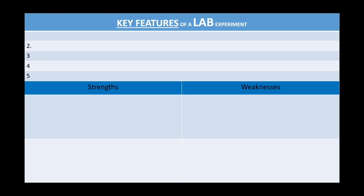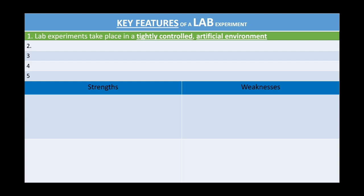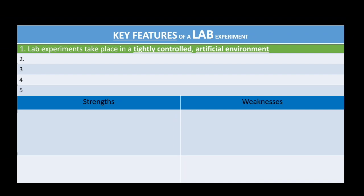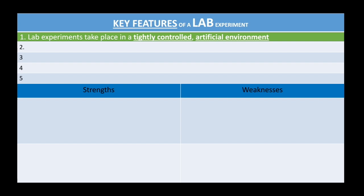The first question is: where do these experiments get conducted? You might think the obvious answer is that a lab experiment takes place in a lab, but technically that's not always true. Where they do take place is what we would call a tightly controlled artificial environment. The researcher is controlling what is going on in that room, wherever that room may be — so it's a tightly controlled, artificial, fake, contrived environment.